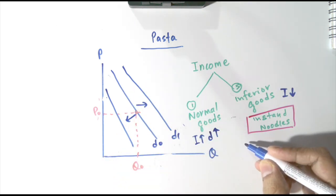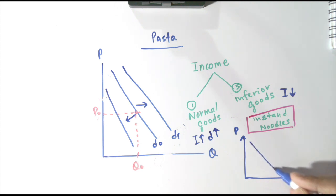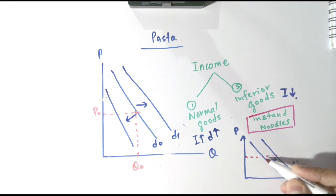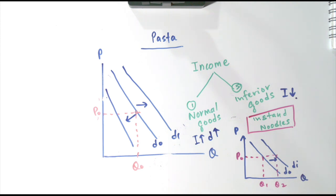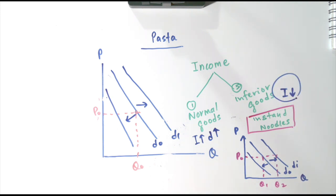But what about instant noodles? Initially the demand was D0. As income decreases, your demand for instant noodles will increase from D0 to D1, because you have less money and would prefer to purchase cheaper instant noodles. So at price P0, quantity moves from Q1 to Q2. In summary: if your income increases, you buy more normal goods like pasta but less inferior goods like instant noodles. If your income decreases, you buy less pasta and more instant noodles.